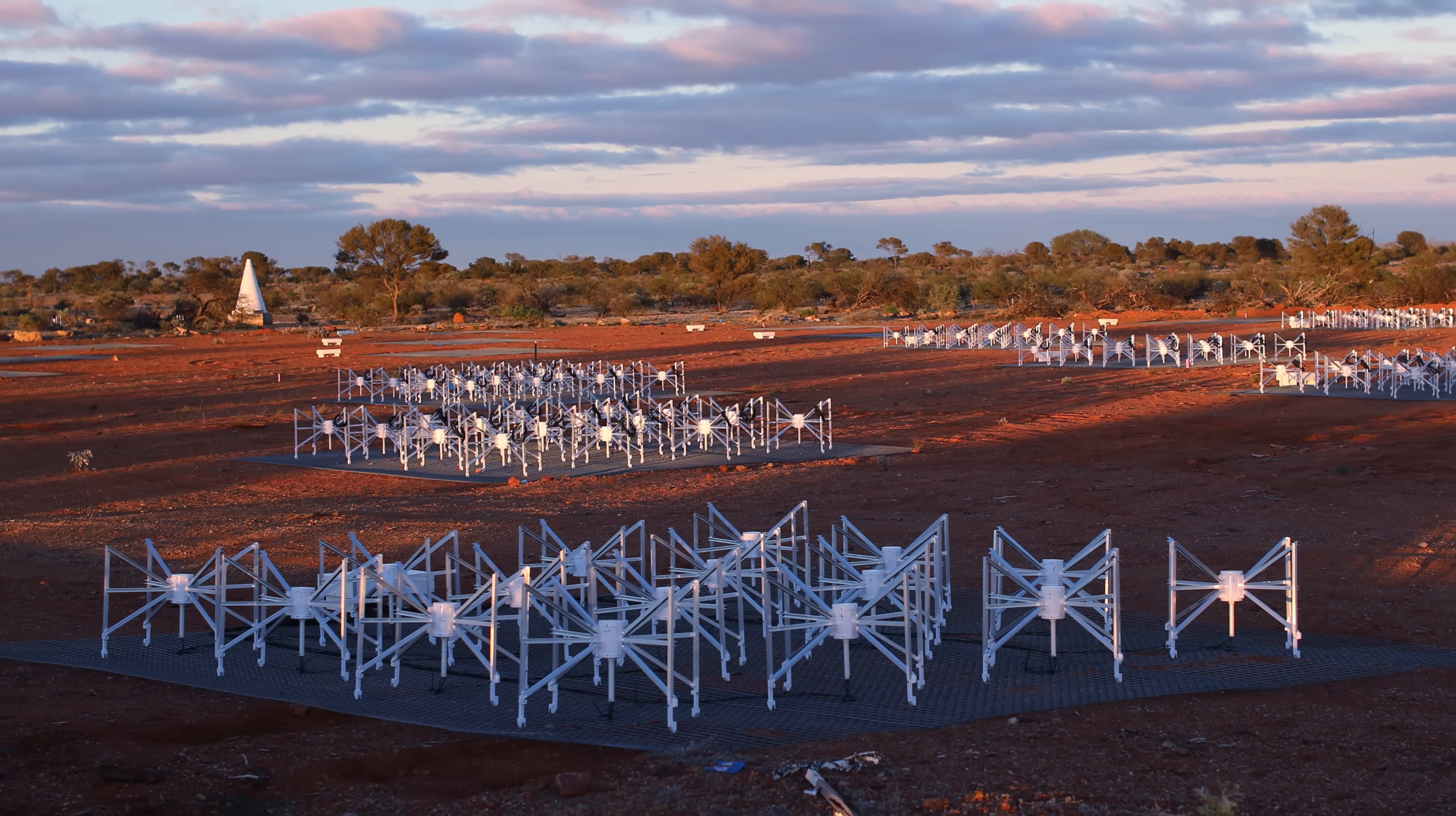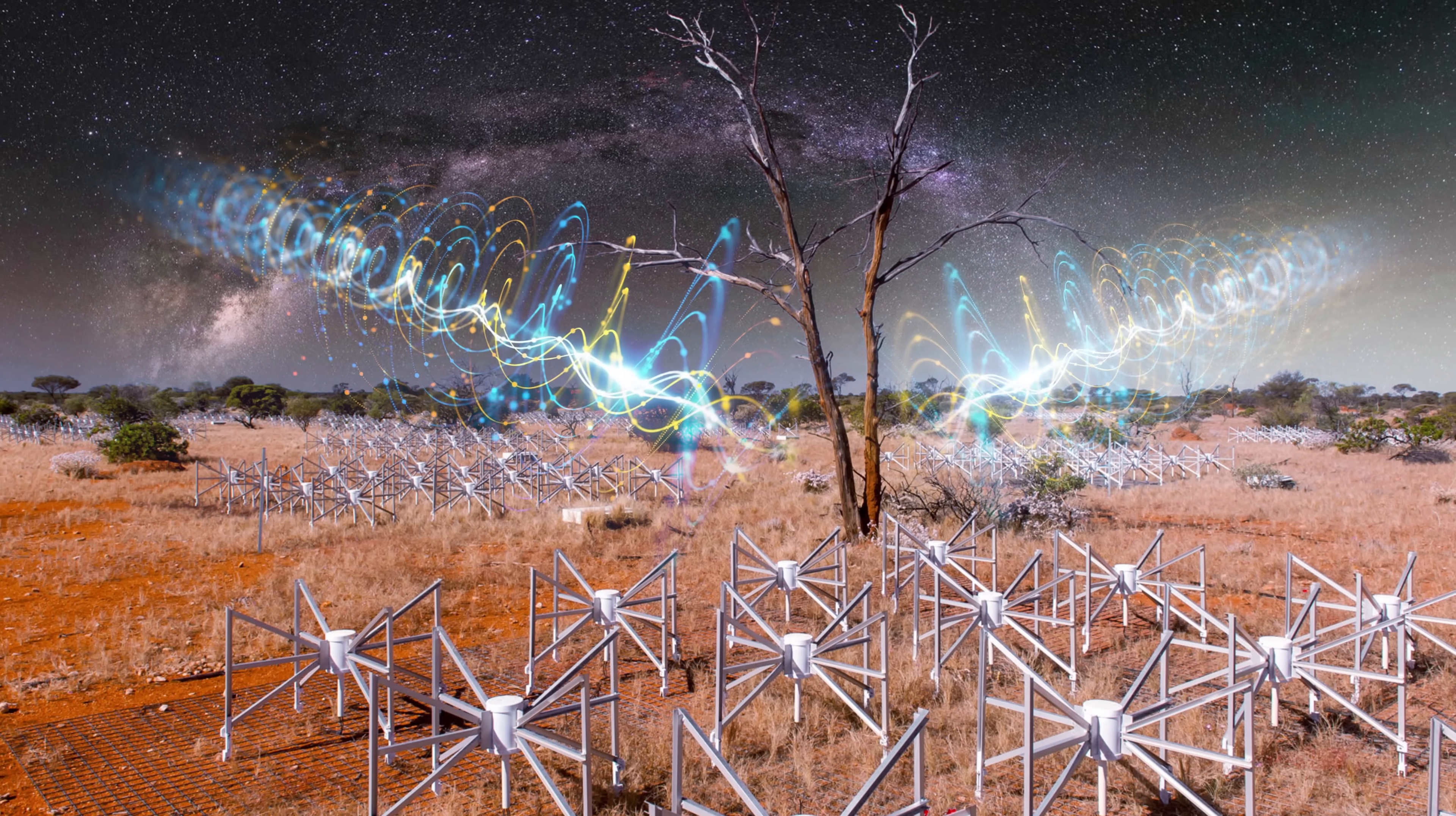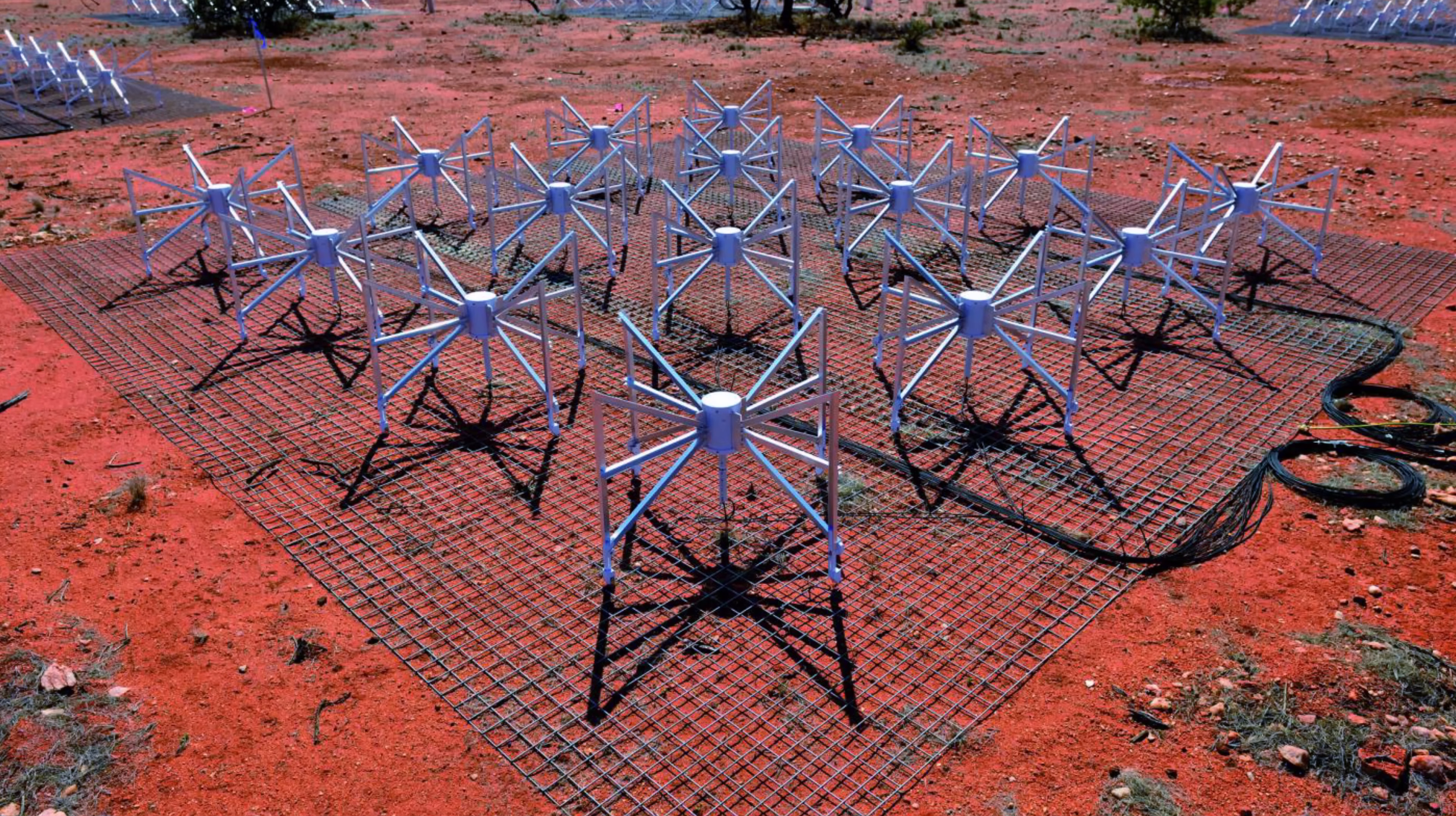Composed of thousands of antennas scattered across an arid landscape, the Murchison Widefield Array is an engineering feat and a testament to human curiosity. Each antenna is like a finely tuned ear, listening intently to a whisper. Behind the scenes, a team of dedicated scientists and engineers work tirelessly to calibrate and maintain this complex system.